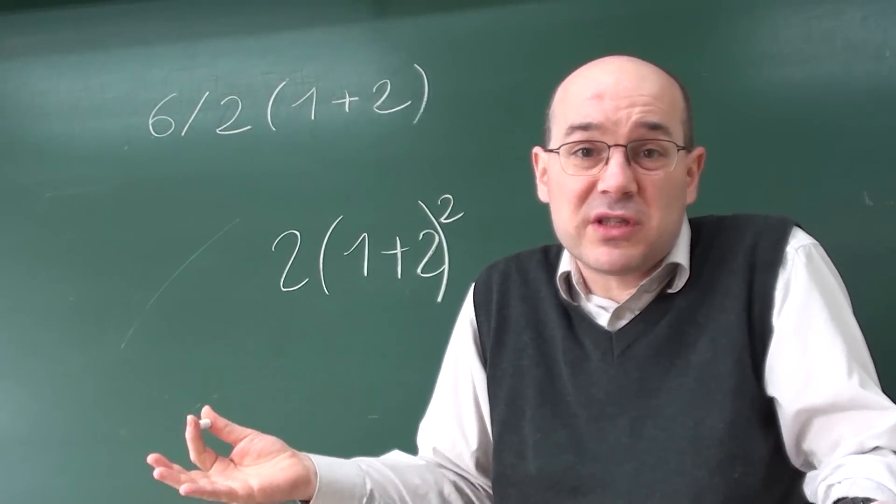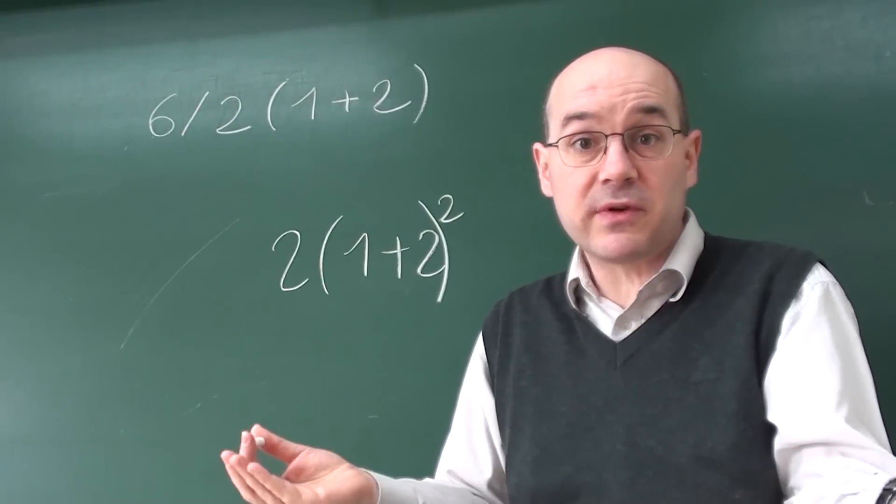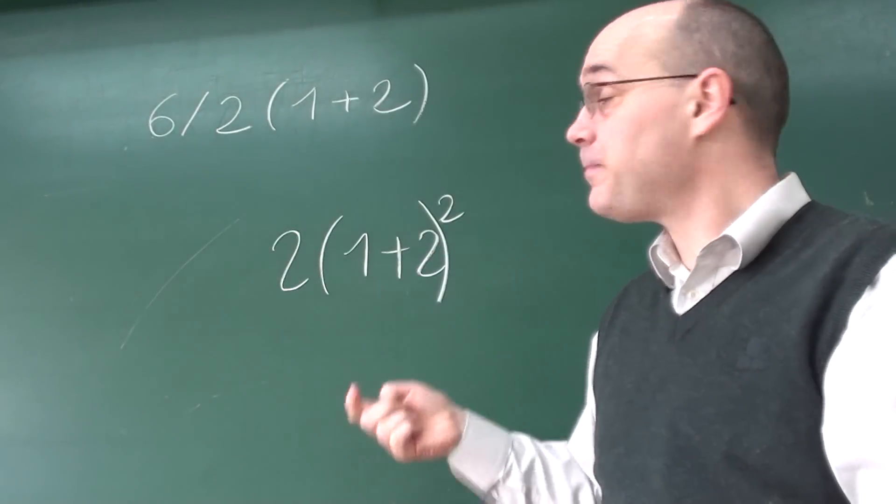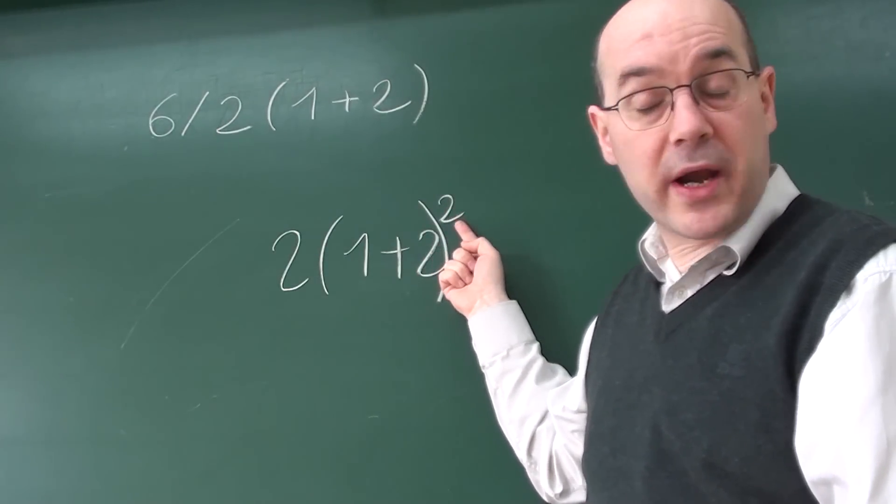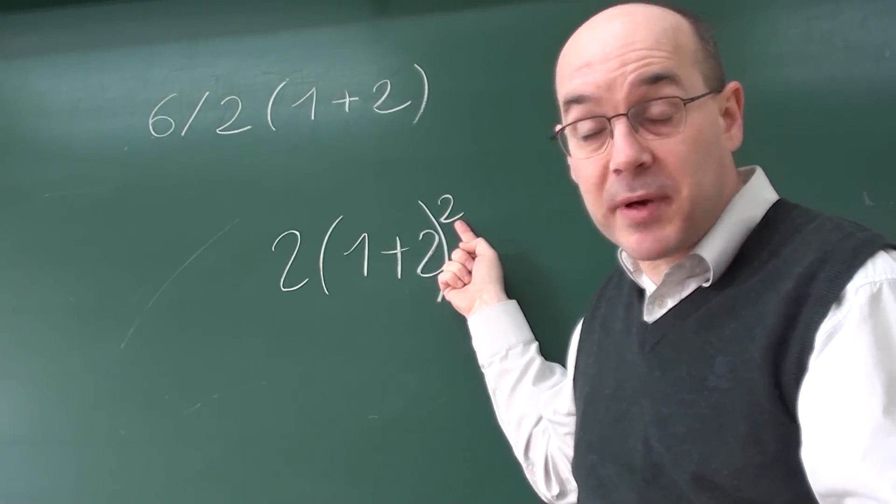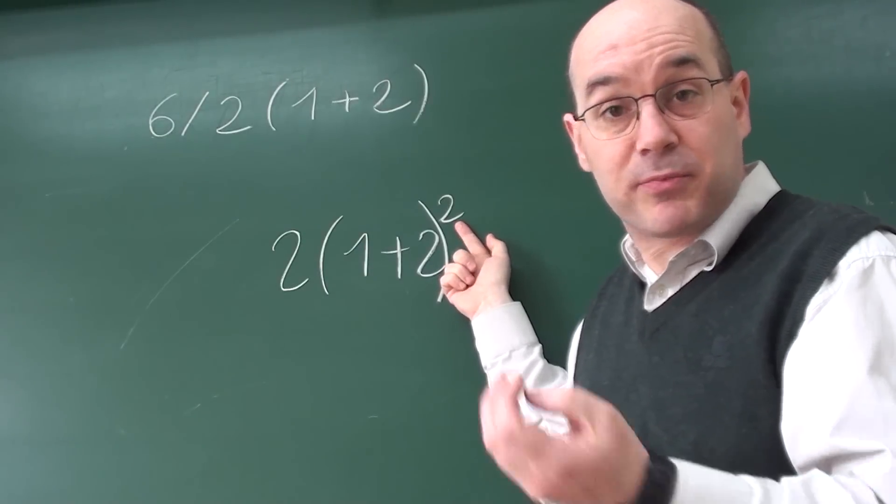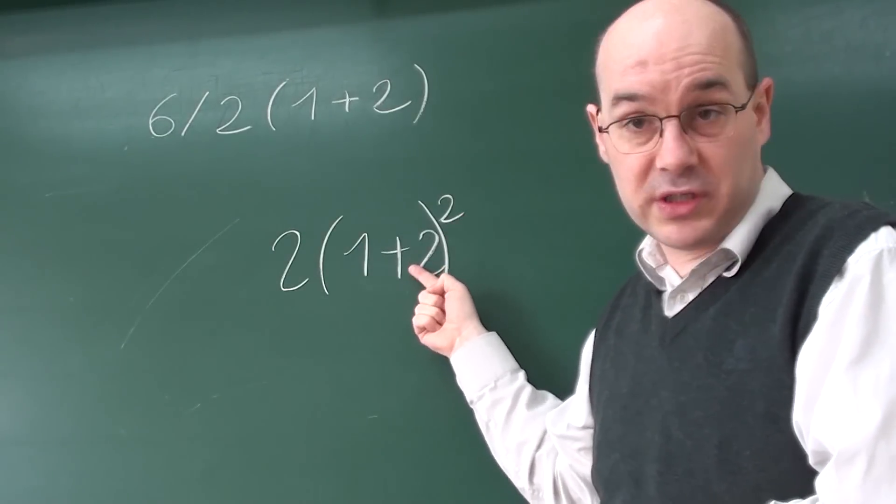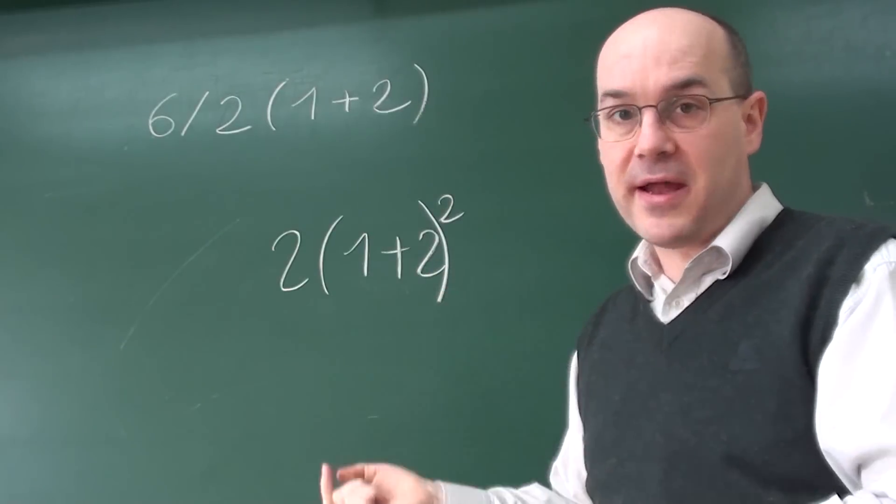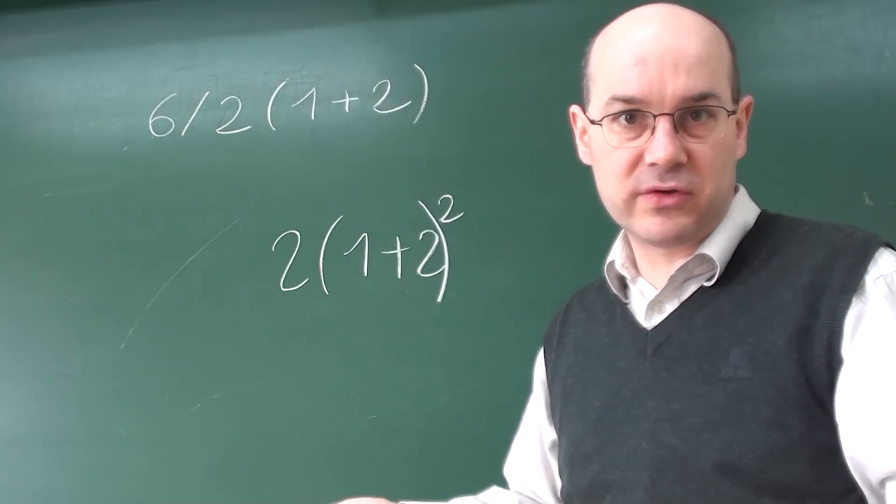Obviously you are not going to distribute first. The reason is very simple, because the square, the exponent, has priority. So you are going to deal with the exponent first. Then, if necessary, you are going to distribute.